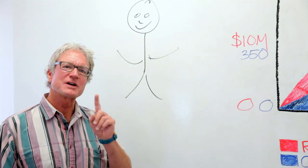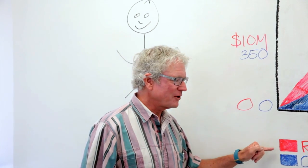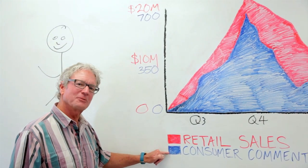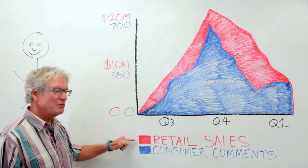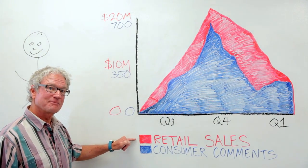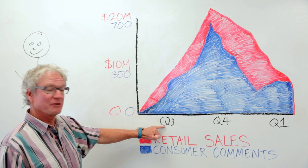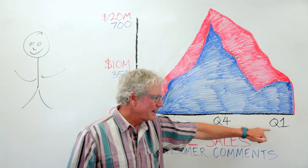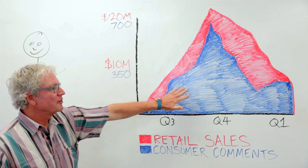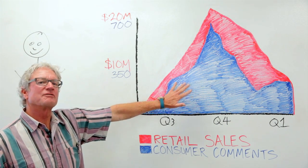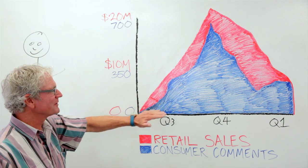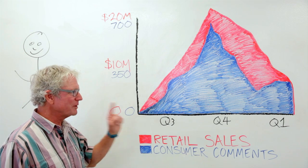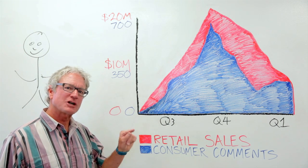But today we're going to talk about a case study where we look at consumer comments, the volume of consumer comments, as it's related to retail sales. So what we have is quarter 3, quarter 4, and quarter 1. The blue is the volume of consumer comments, the red is actual retail numbers. And let me remind everyone, these are actual retail numbers and actual consumer volume numbers.